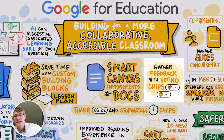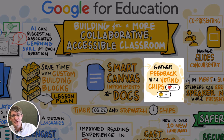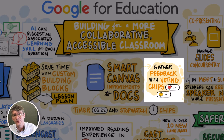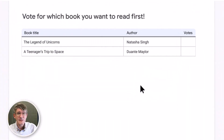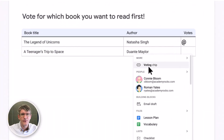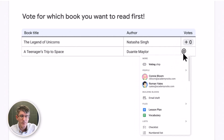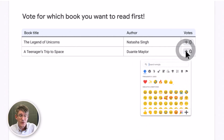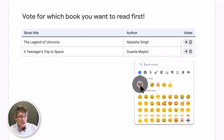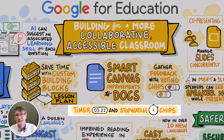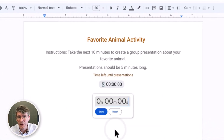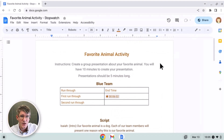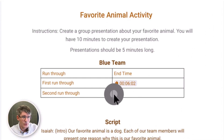On the right-hand side of the image, there are some new chips to play around with. First, we have emoji voting chips, which allow users to quickly vote and express their opinion within a Google Doc. We also have two additional chips rolling out: the stopwatch and the timer chips. These will become available within Google Docs within the next couple of weeks.